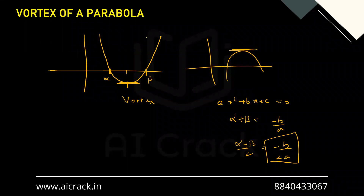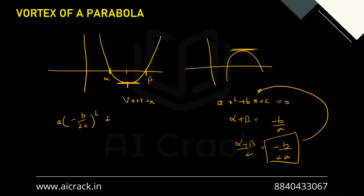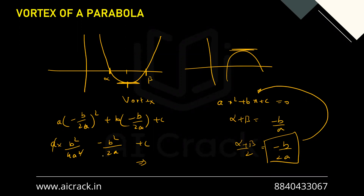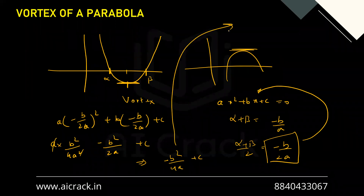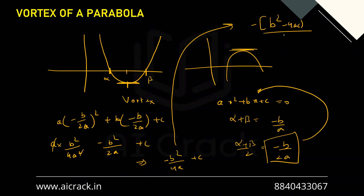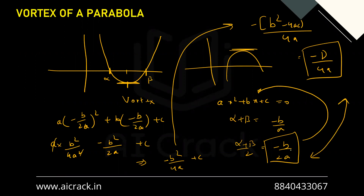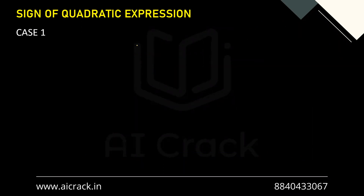This is applicable for both upward and downward parabolas, so -b/2a is the x-coordinate of the vertex. Substituting this back into the equation: a·(-b/2a)² + b·(-b/2a) + c gives a·(b²/4a²) - b²/2a + c, which simplifies to -b²/4a + c, and eventually to -(b²-4ac)/4a = -D/4a. So the vertex x-coordinate is -b/2a and the y-coordinate is -D/4a, where D is the discriminant.